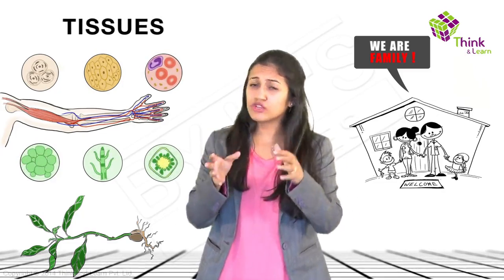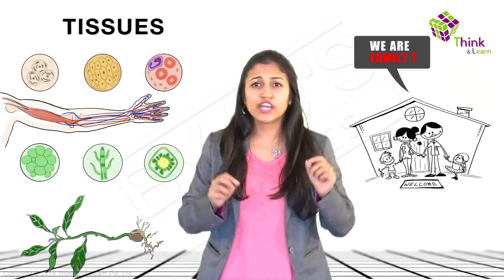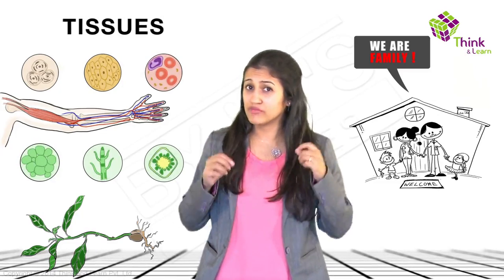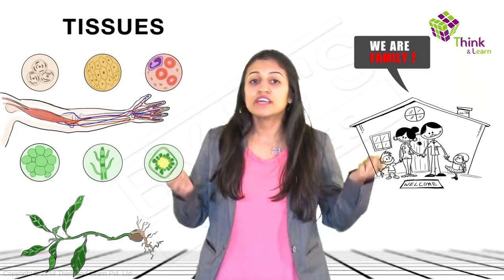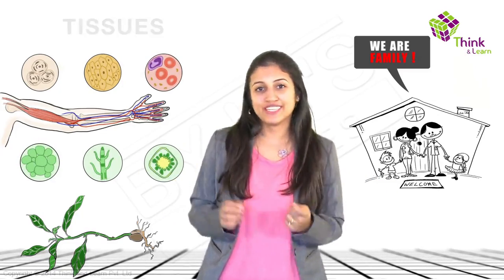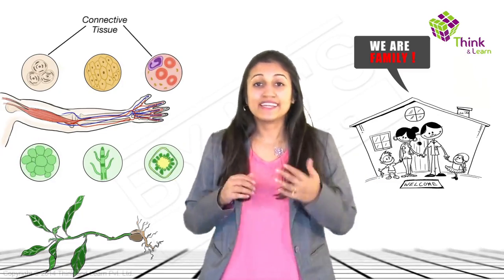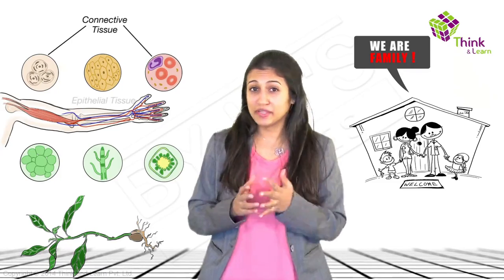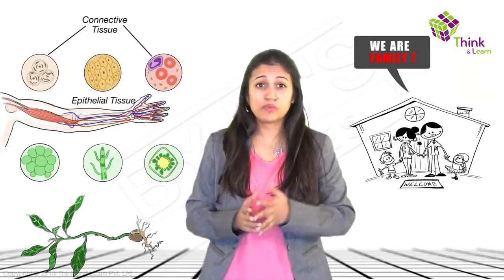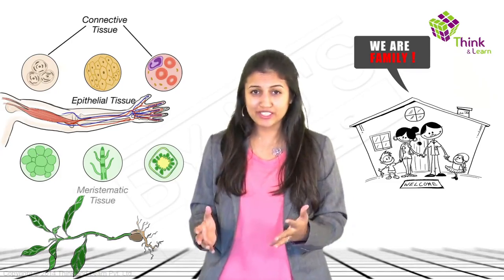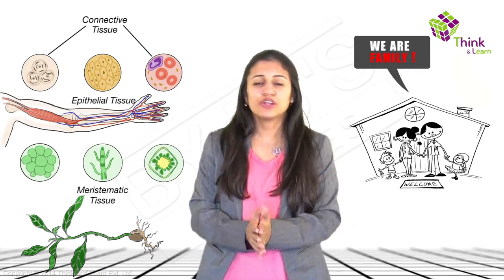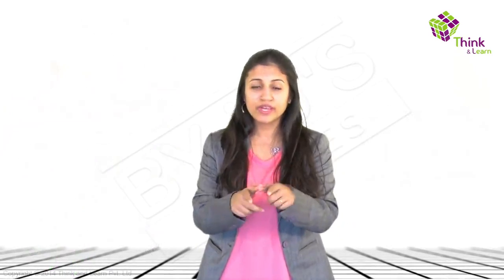Now, depending on which part of the animal body or plant that the families live, they have special names like connective tissue, epithelial tissue, metastatic tissue, and so on. We'll get to them soon enough, and don't worry — we'll learn it in such a simple way that you will get a hang of all those names.